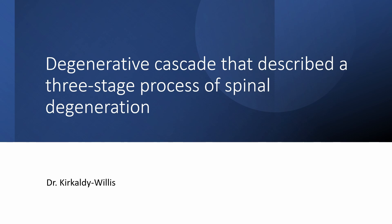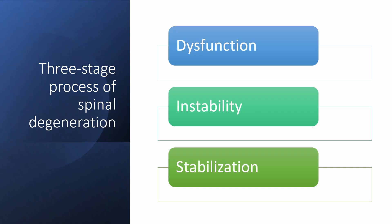Dr. Kirkcaldy-Willis' influential work introduced a degenerative cascade — a three-stage process of spinal degeneration consisting of dysfunction, instability, and stabilization. This process was primarily drawn from his studies on the lumbar spine, but the principle also applies to other joints and parts of the musculoskeletal system.